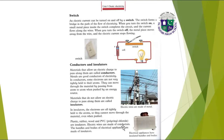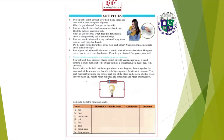Electric wires are made up of conductors; the handles and bodies of electrical appliances are made up of insulators. Activity: pull a plastic comb through your hair many times and then hold it close to a piece of paper. What do you observe? Can you explain this?